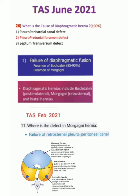Assalamu alaikum dear doctors. In this video we are solving important task questions. The question is asking about what is the cause of diaphragmatic hernia. The cause of diaphragmatic hernia is pleuroperitoneal foramen defect, or failure of the pleuroperitoneal canal or foramen defect formation.